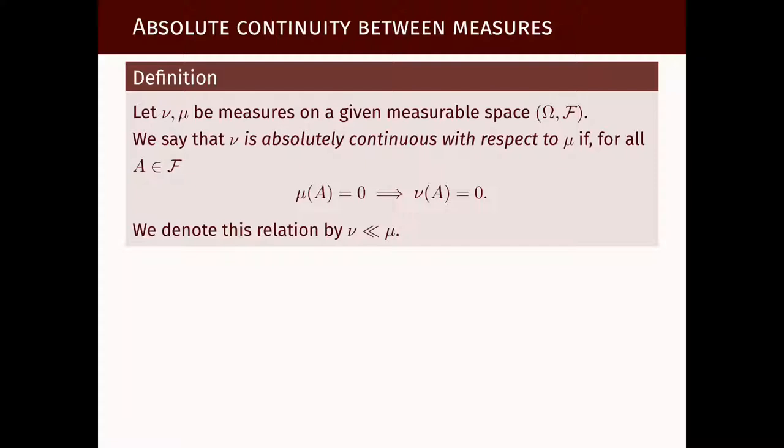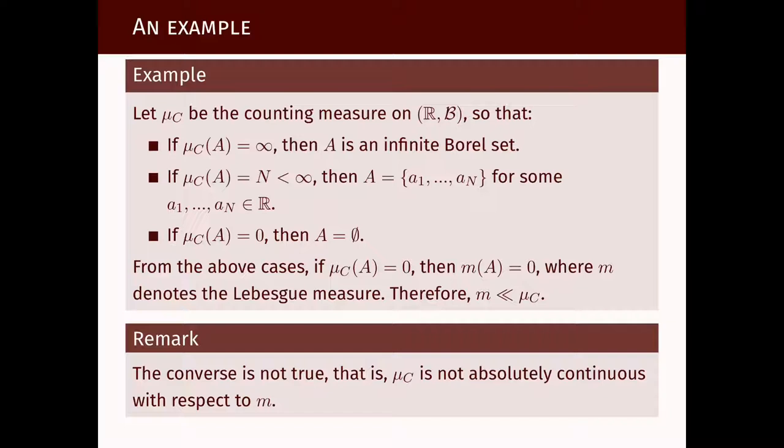We say that a measure ν is absolutely continuous with respect to another measure μ if we have the following property: every set A that has μ measure 0 also has ν measure 0. This is what it means to say ν is absolutely continuous with respect to μ, which is denoted by ν ≪ μ.